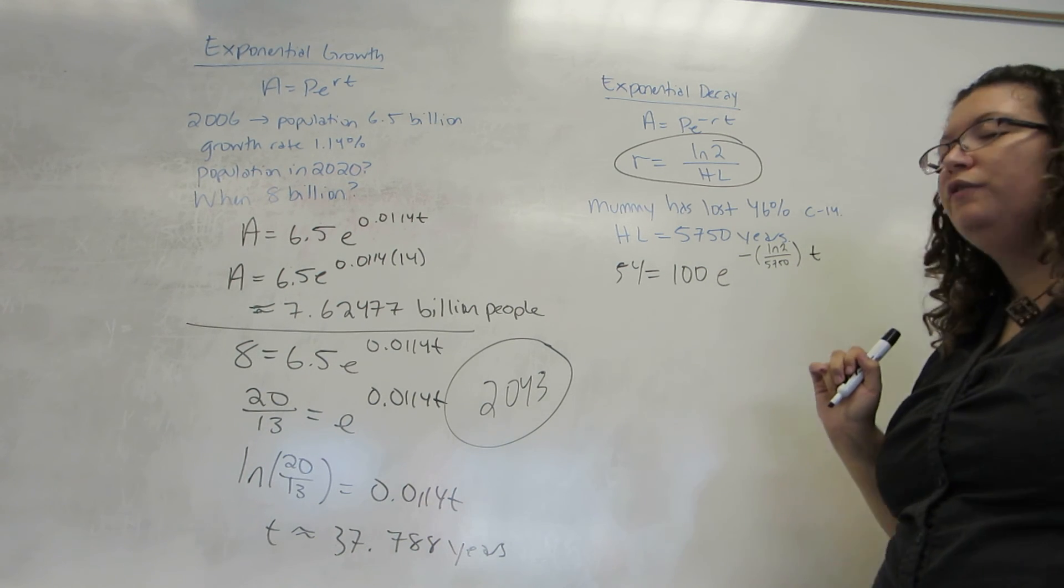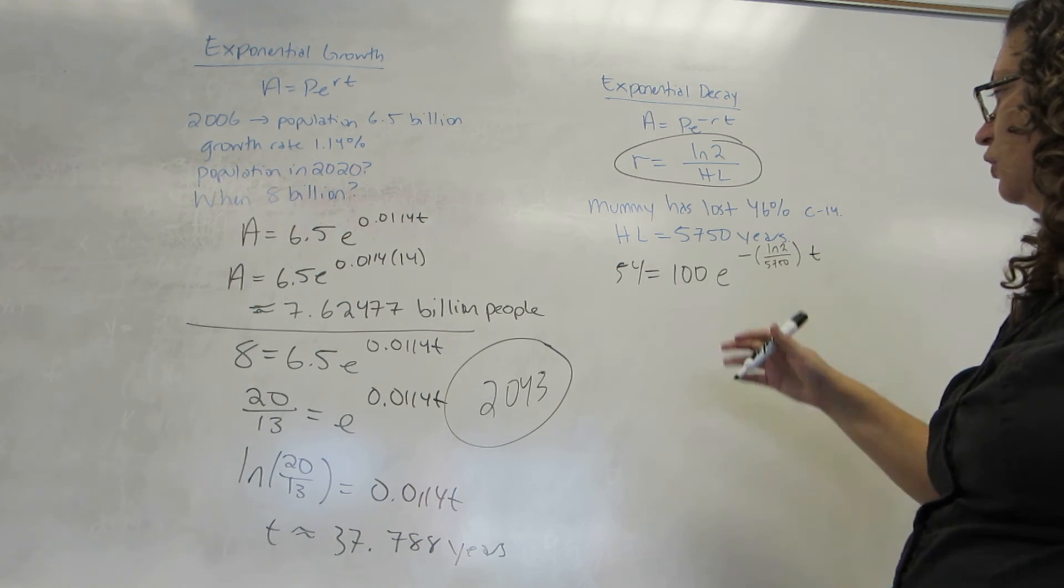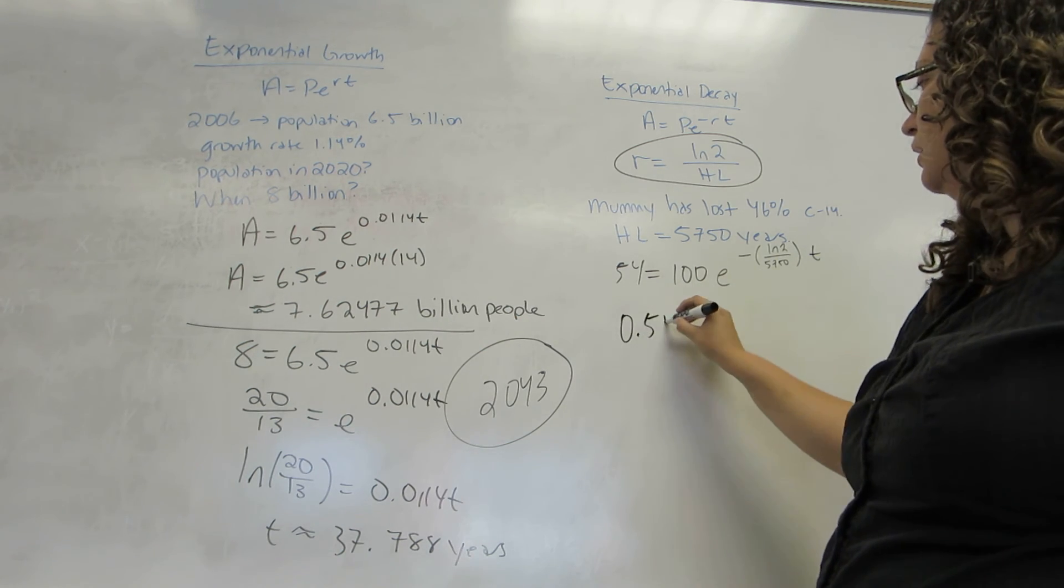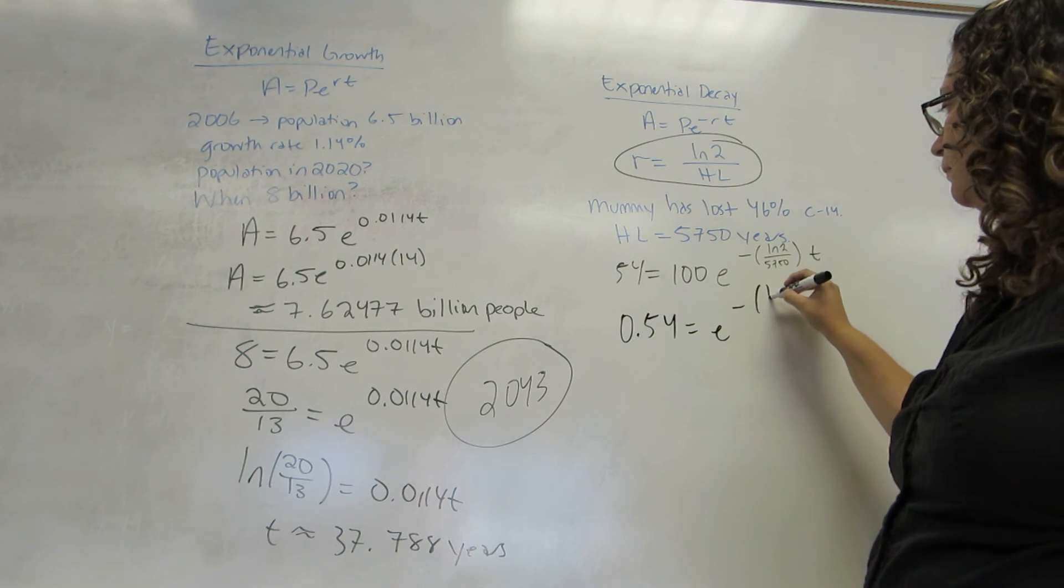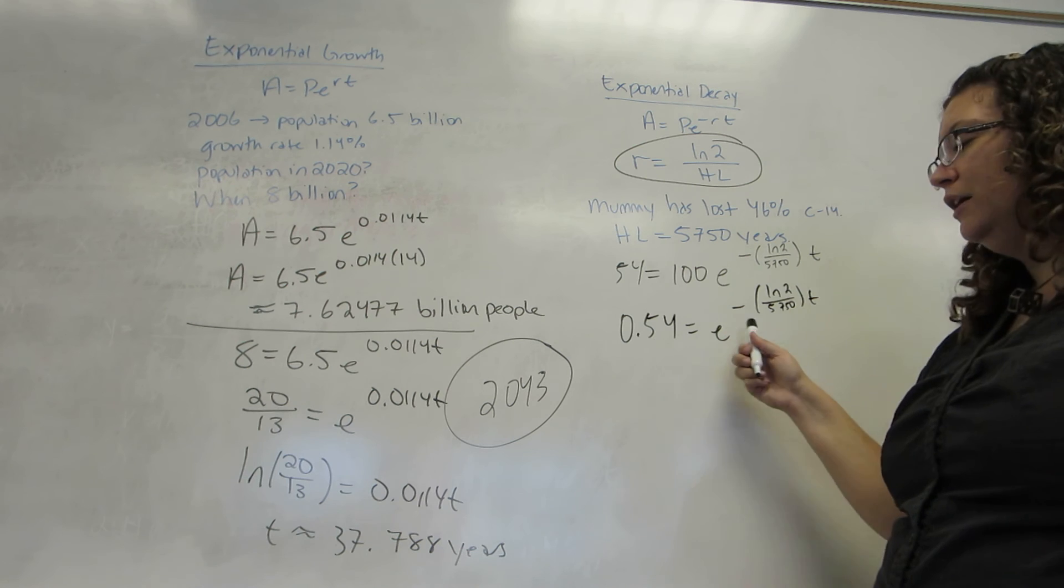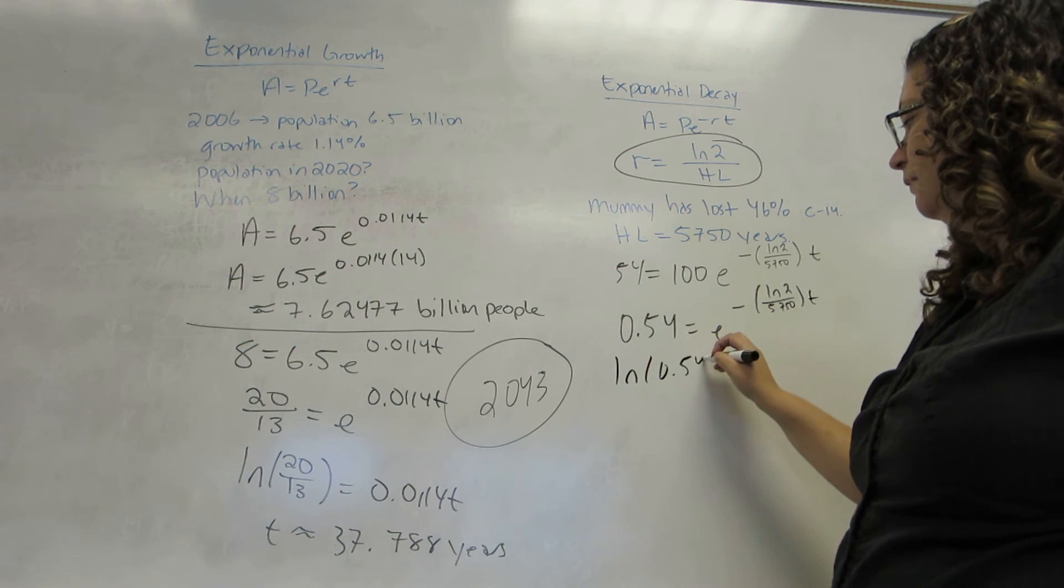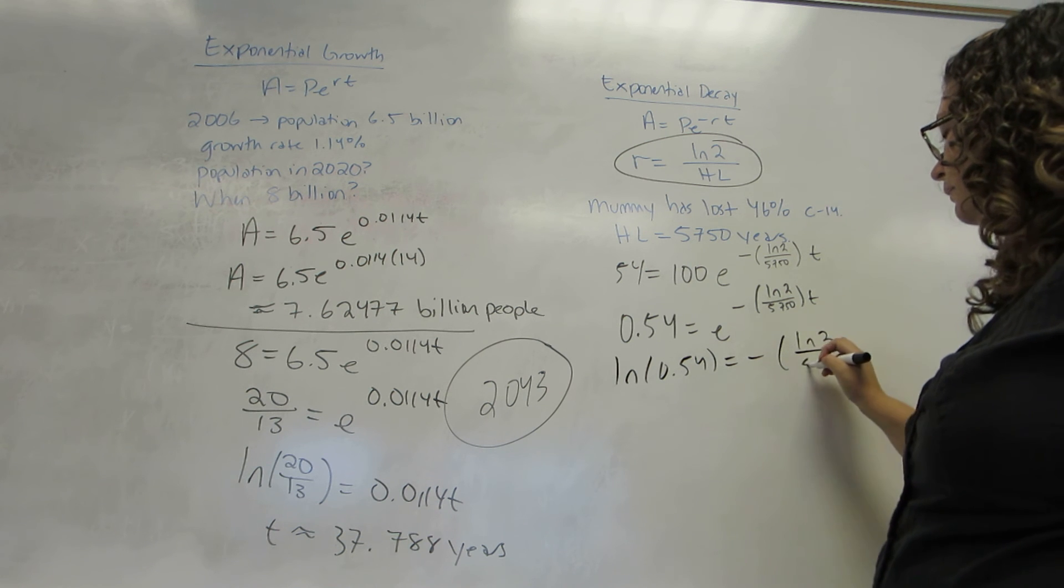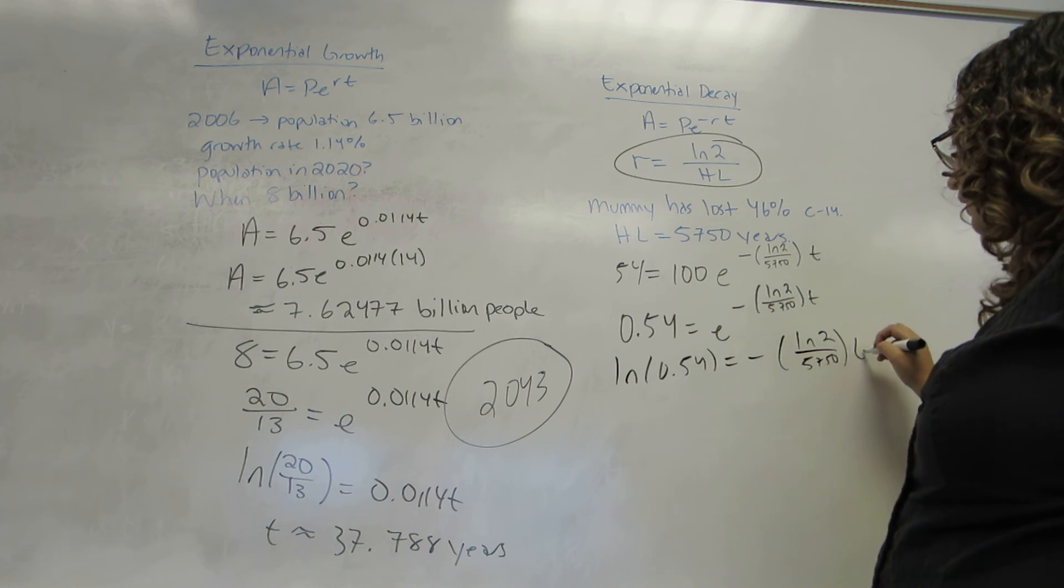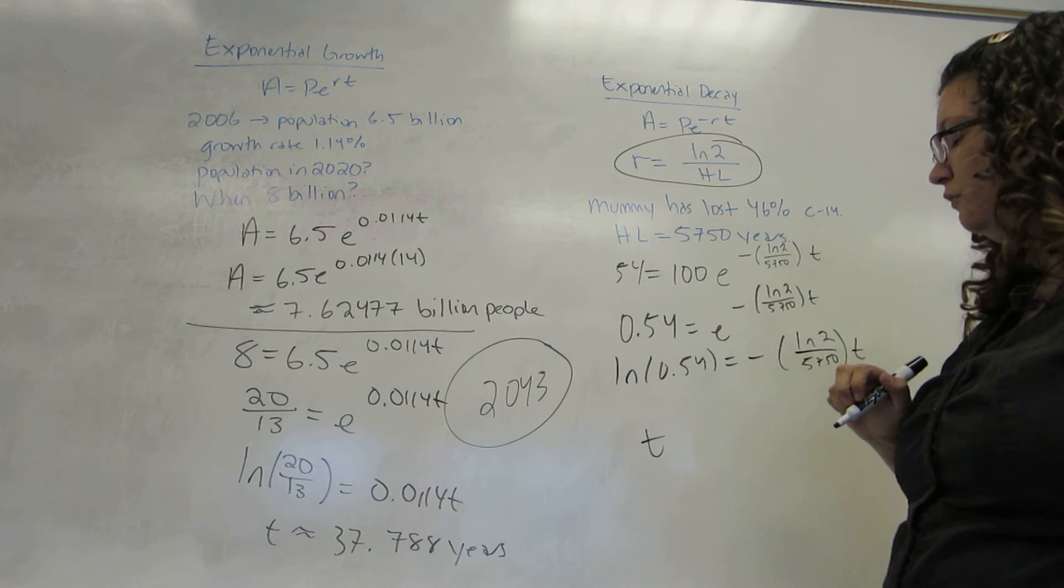And I am, of course, solving for T. And now, this is the same as our previous one. We get the exponential alone. We take a natural log of both sides that will cancel this E.